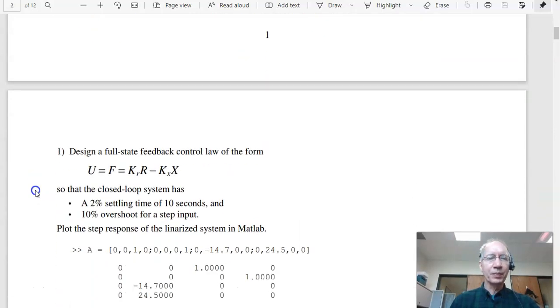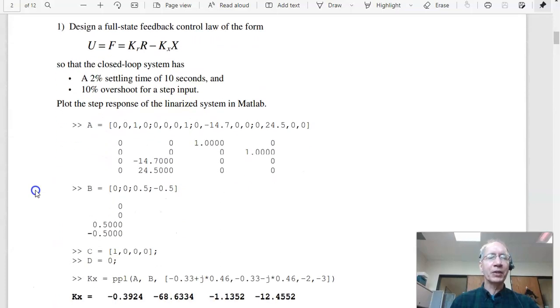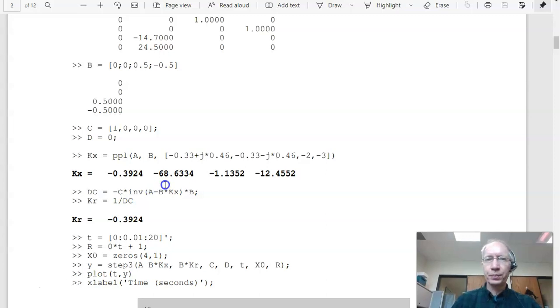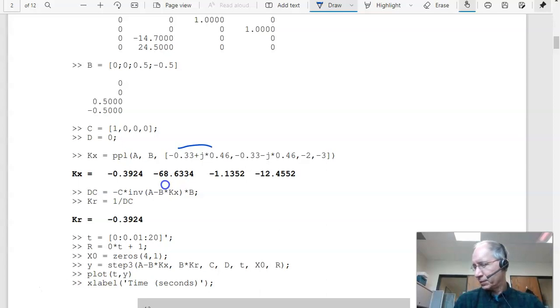So the first problem is come up with a stabilizing feedback control law. This is the separation principle. How you come up with the control law is completely independent of how you come up with the observer. So if I want 2% settling time of 10 seconds, 10% overshoot, input the A matrix, B matrix. Using pole placement, I want to put the dominant pole right here. Put the dominant pole at minus 0.33 plus j 0.46. The complex conjugate and the other two poles are kind of arbitrary. I just put them at minus 2, minus 3, get them out of the way. Do that I have my four feedback gains, kx and kr.